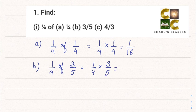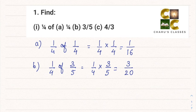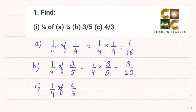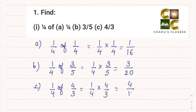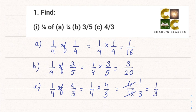(b) 1/4 of 3/5 is 1/4 multiplied by 3/5. Numerators multiply to give 3 and 4 into 5 gives 20, so the answer is 3/20. (c) 1/4 of 4/3 is 1/4 multiplied by 4/3, giving 4/12. Both 4s are in the same table so we cancel them, giving the answer 1/3.